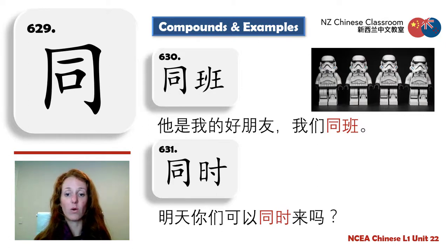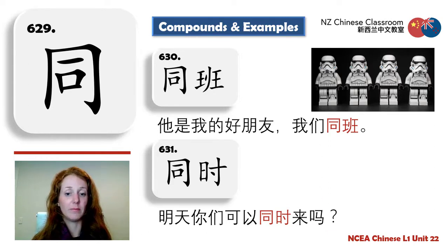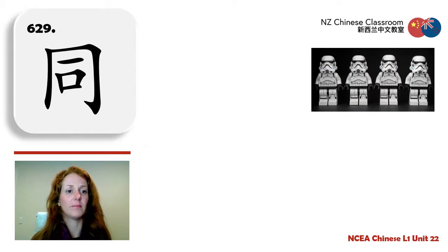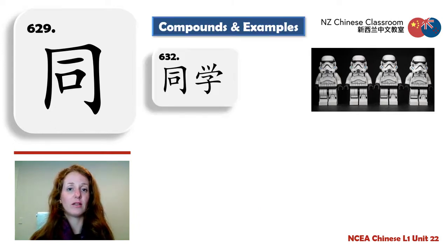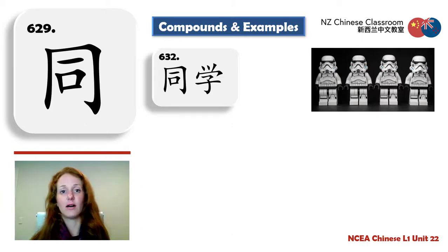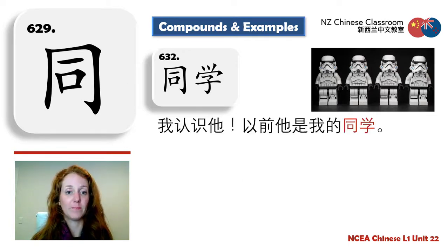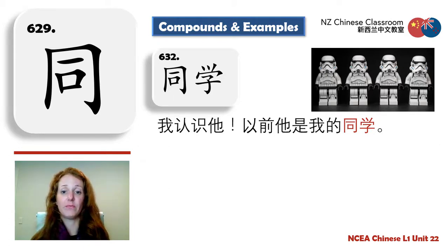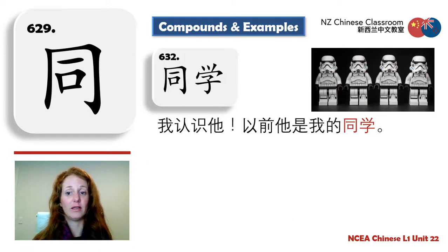Example of 同时: 明天你们可以同时来吗? — Can you guys come at the same time tomorrow? Your teacher might say 同学们好 at the start of class. And 同学 means classmate. Example: 我认识他，以前他是我的同学 — I know him. Previously he was my classmate.